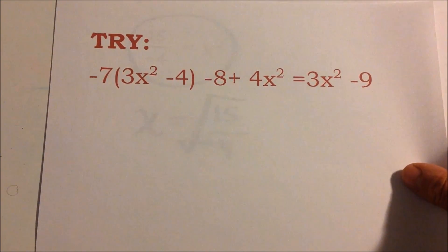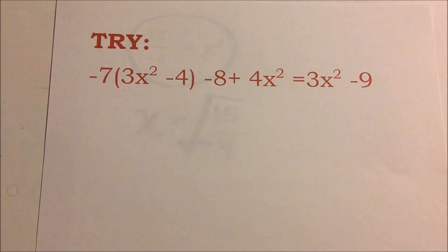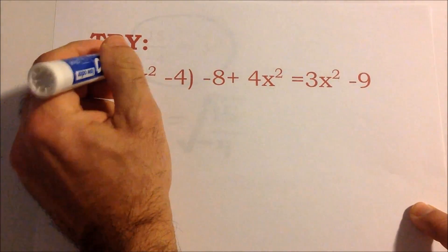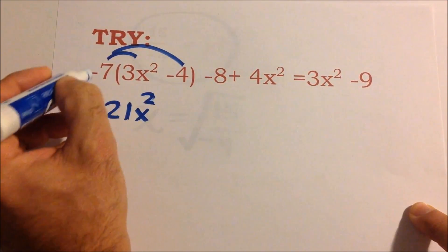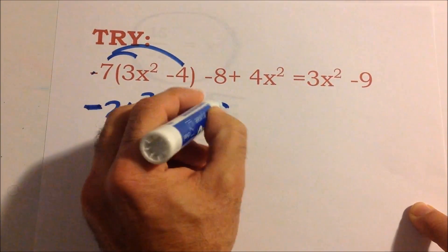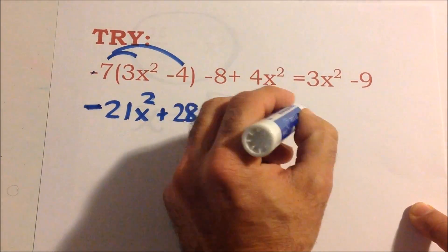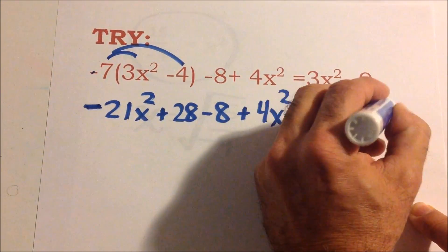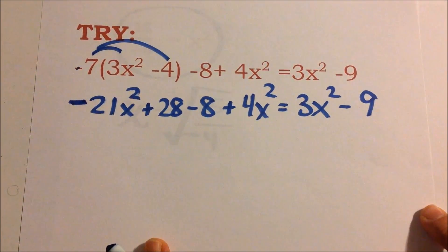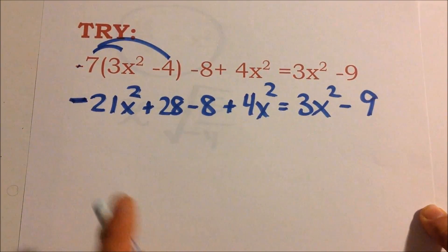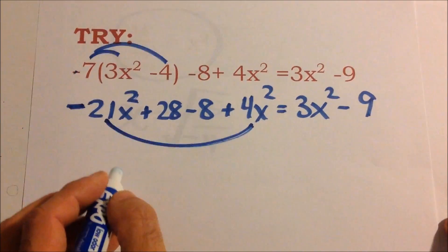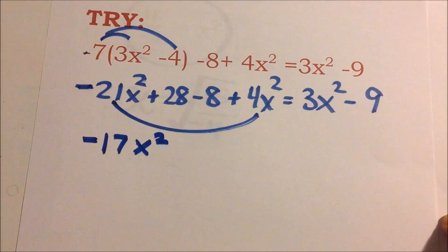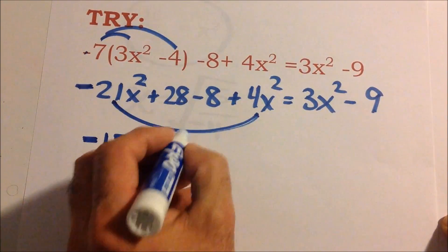Try this one on your own — pause and see what you get. We distribute again, making sure not to forget the negative: that gives negative 21x squared, and a negative times a negative is positive, so plus 28, minus 8, plus 4x squared. Combining like terms: negative 21x squared plus 4x squared gives negative 17x squared, and 28 minus 8 gives plus 20.